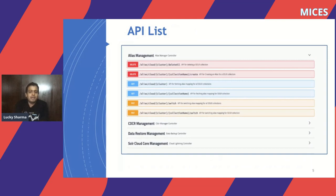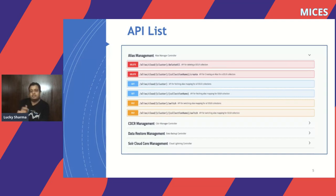Here's the API list. We have APIs for aliases, CDCR, data restore management, and cloud core management. For aliases, you can delete all aliases, switch aliases, switch for specific clusters, or switch a specific collection. Similarly, for CDCR and core management, we have cluster-based operations.